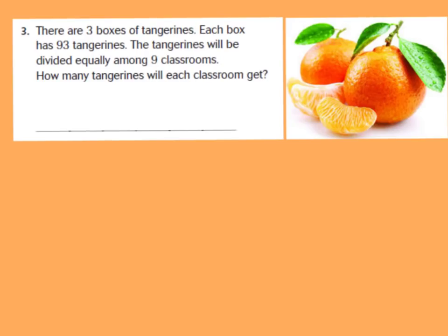All right, let's look at number 3. Number 3 says there are 3 boxes of tangerines. Each box has 93 tangerines. The tangerines will be divided equally among 9 classrooms. How many tangerines will each classroom get? Now I know that there are 3 boxes, and each box, every box, has 93 tangerines. So first, I'm going to find out how many total tangerines there are by multiplying 93 times 3. 3 times 3, that gives me 9. And 3 times 9 gives me 27. So I know that there are 279 total tangerines.